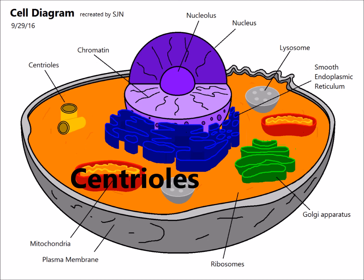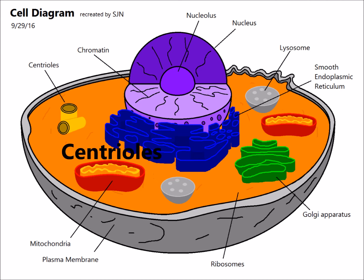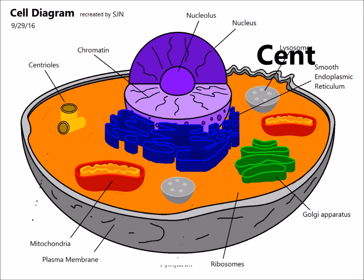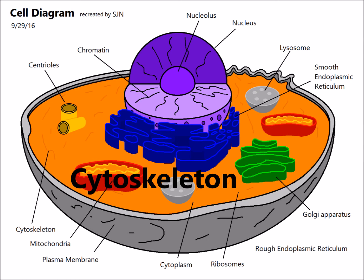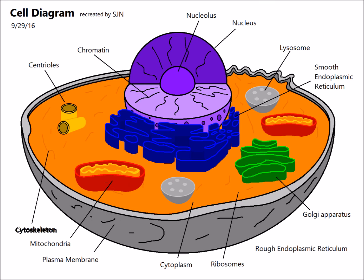Next, we have the centrioles, which are circular organelles made up of a protein called tubulin. In this diagram, I colored them gold. Moving on to the cytoskeleton, which gives the cell shape and provides strength for the cell. In this diagram, the cytoskeleton is orange.